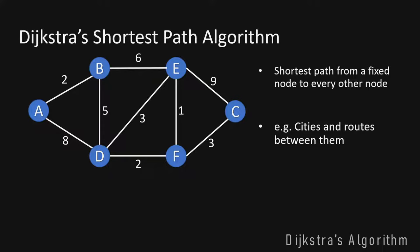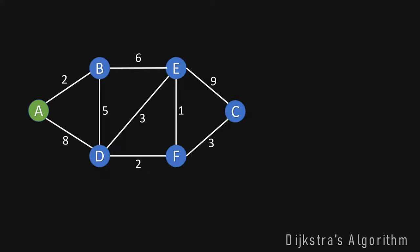Let's take a closer look at this graph and suppose we want to calculate the shortest distance from A to every other node in this graph. This can be easily done with Dijkstra — we just have to keep track of some information while iterating through this algorithm.